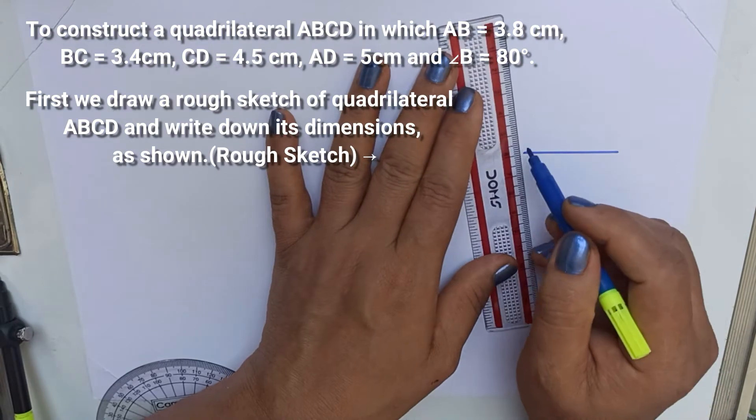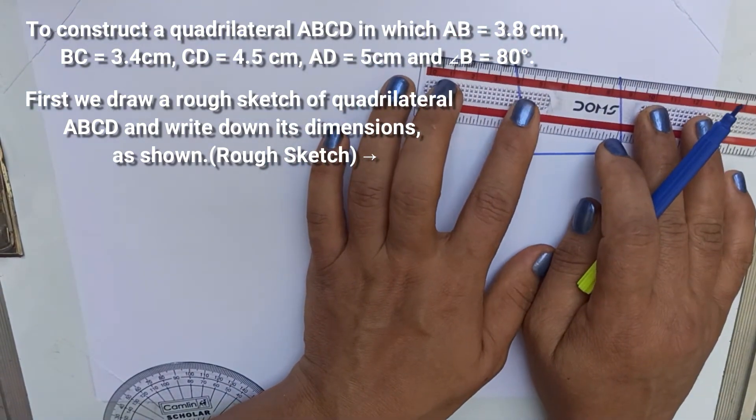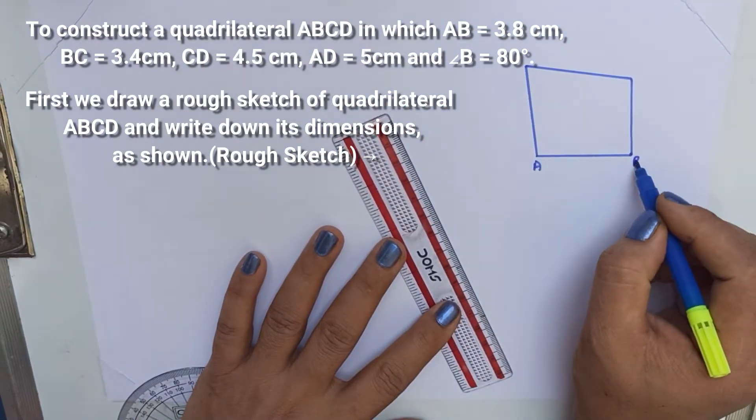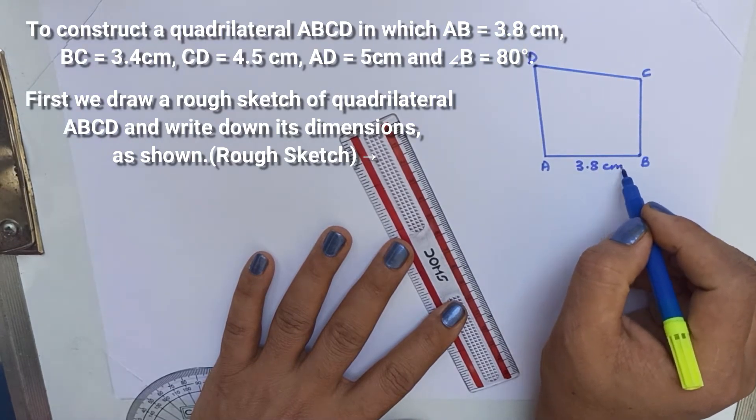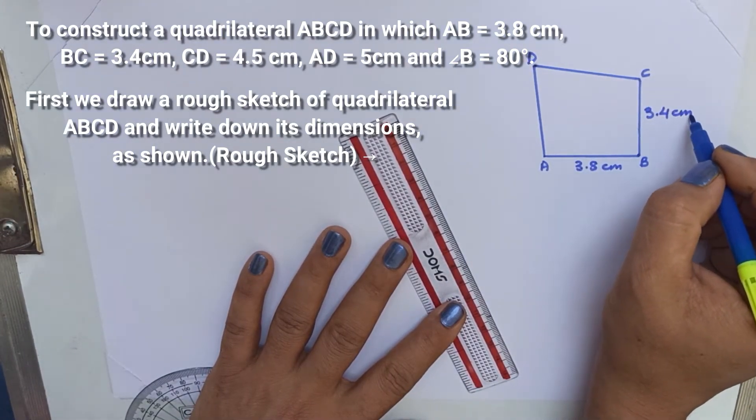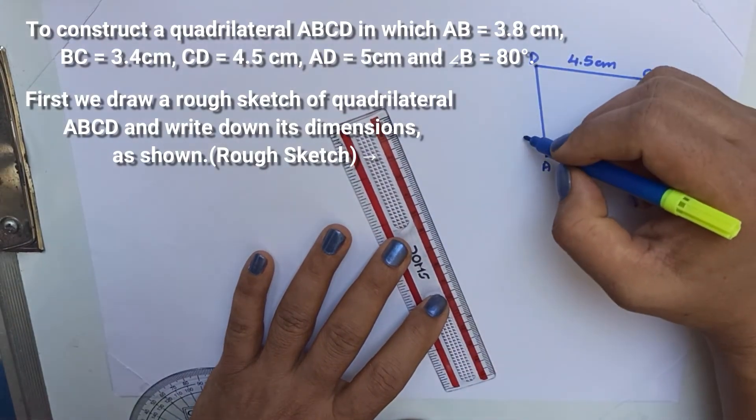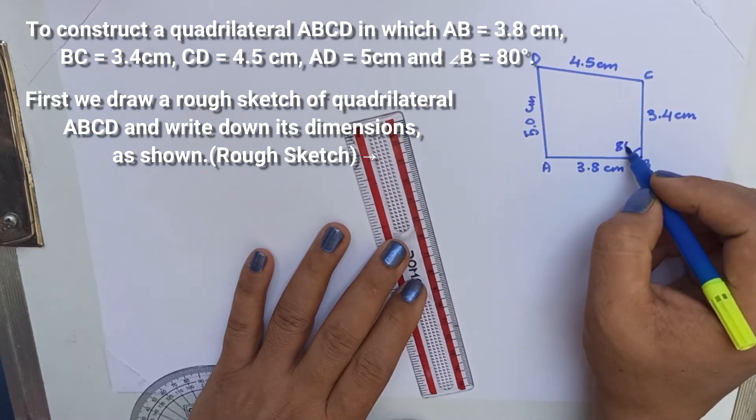First draw a rough sketch of quadrilateral ABCD. Write down all the dimensions as shown. AB is equal to 3.8 cm, AC is equal to 3.4 cm, CD is equal to 4.5 cm, and AD is equal to 5 cm. Angle B is equal to 80 degrees.